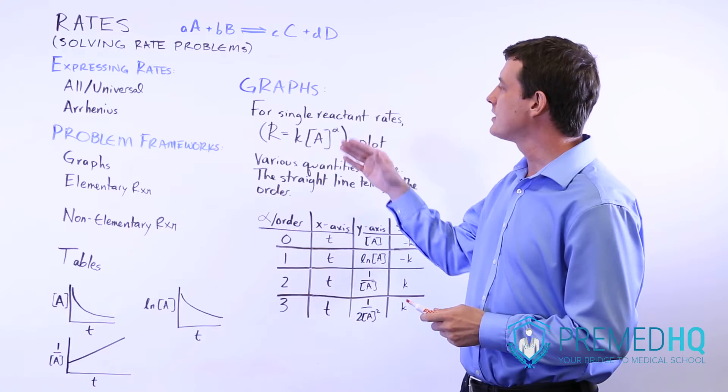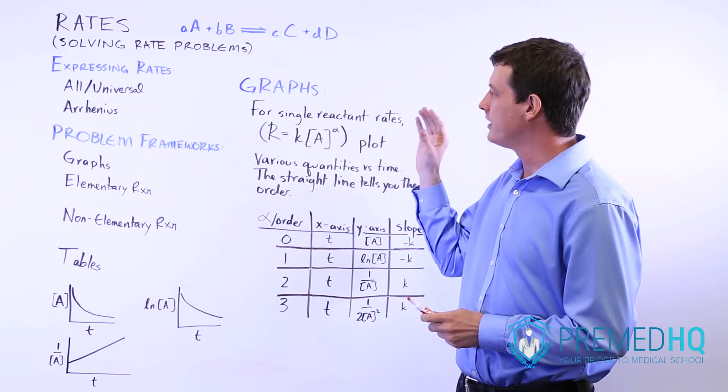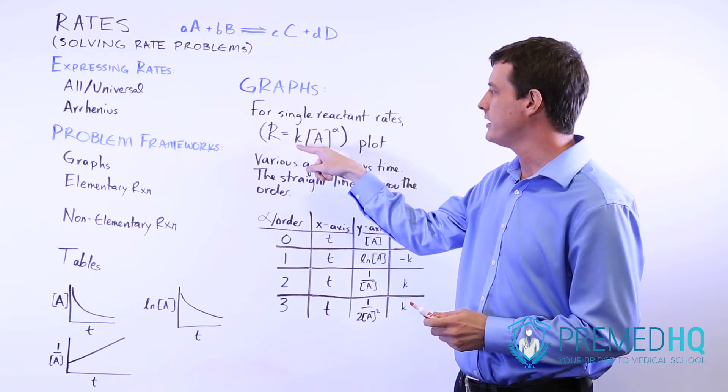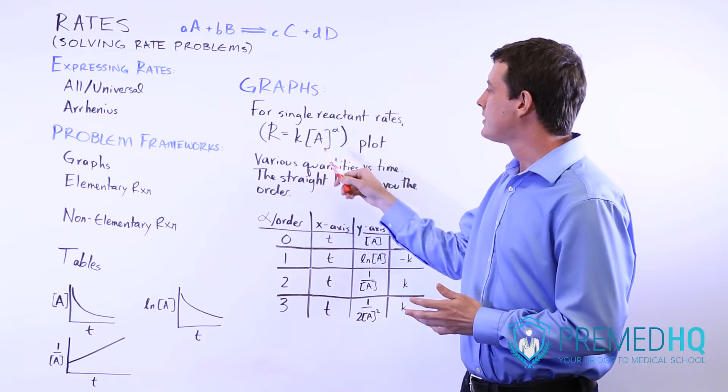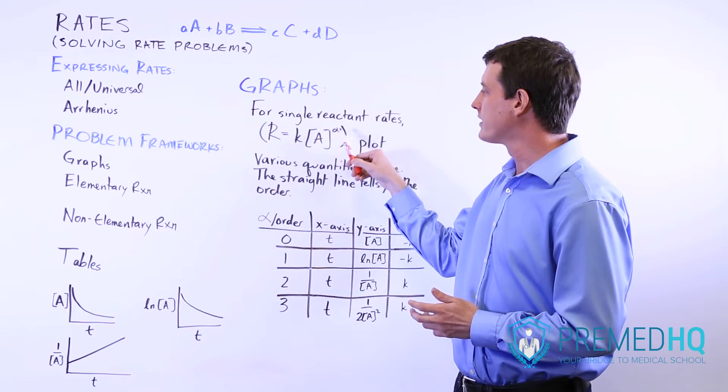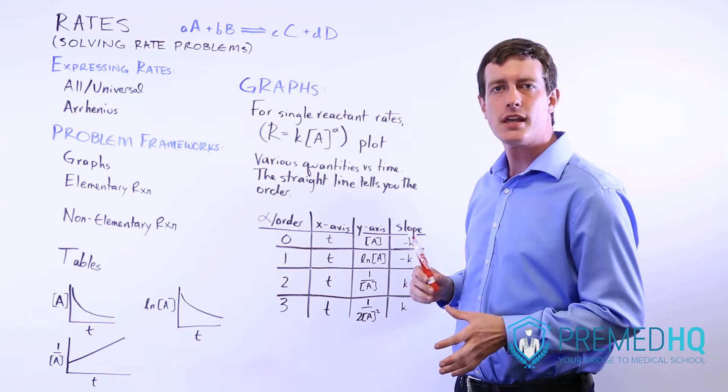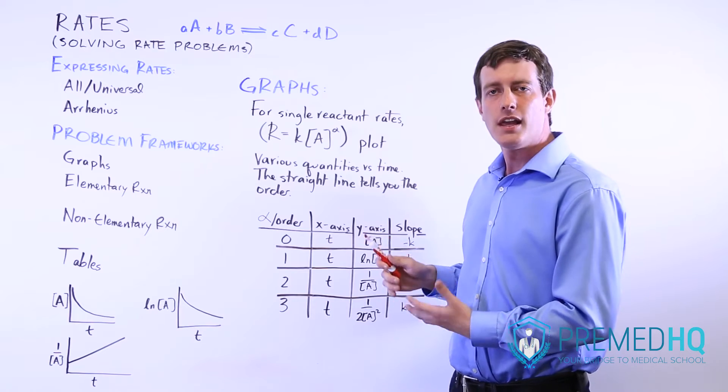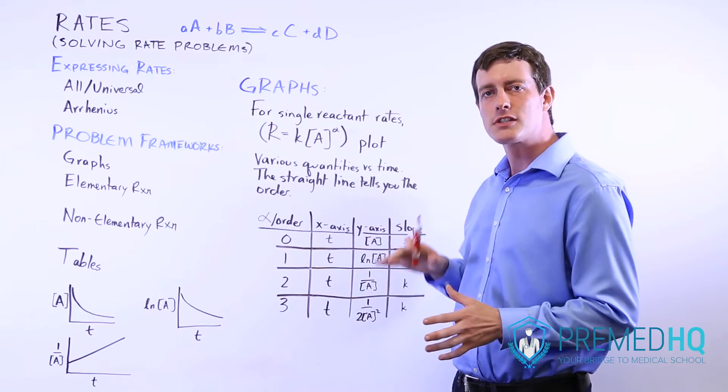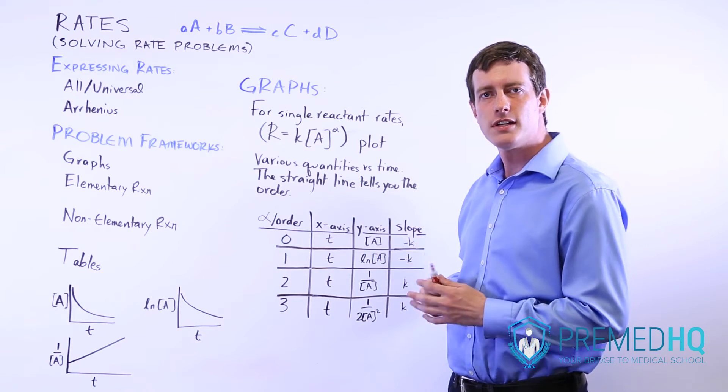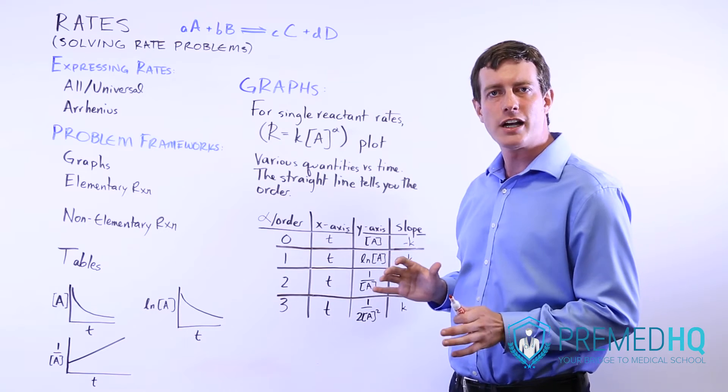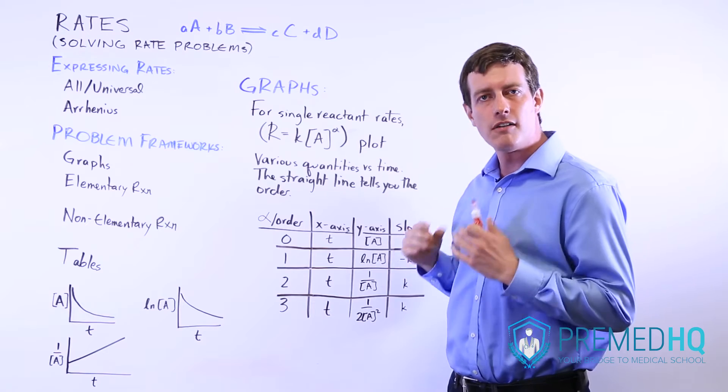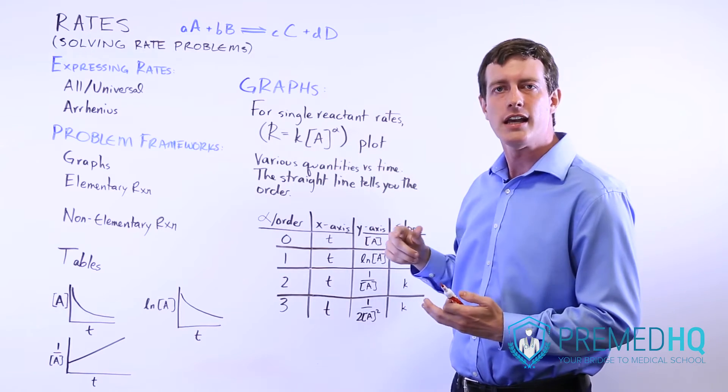The requirement is that you need to have a rate law that is expressed in terms of only one reactant. So it would have something like rate equals some rate constant times only one reactant raised to some coefficient. And what you do is you plot various quantities versus time, and you see which one yields a straight line graph. The graph that yields the straight line will tell you what alpha is, what the order is of that rate law with respect to reactant A.